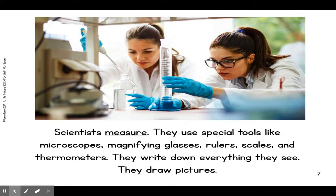Scientists measure. They use special tools like microscopes, magnifying glasses, rulers, scales, and thermometers. They write down everything they see and draw pictures. When scientists do this, boys and girls, it's called collecting data. It's important to collect data so they know how things are changing and if they are.